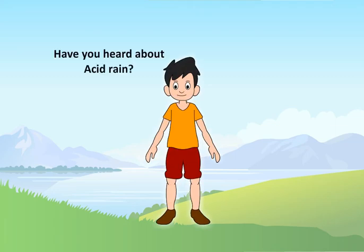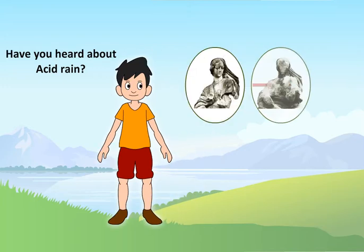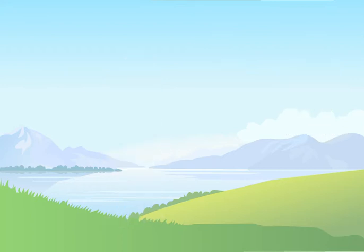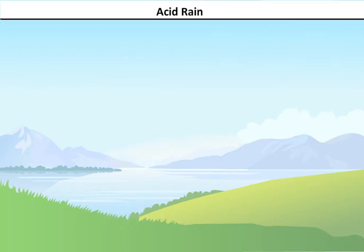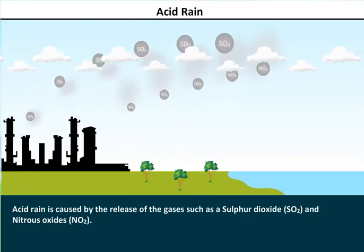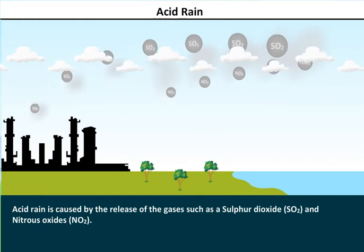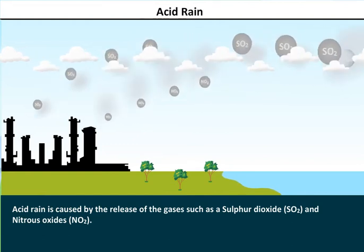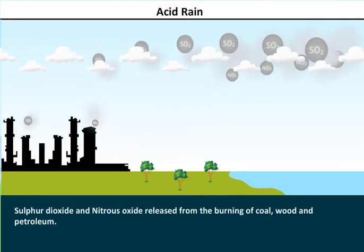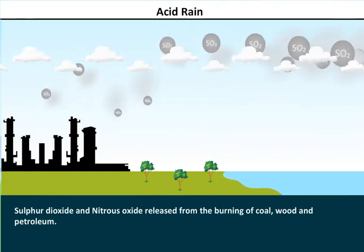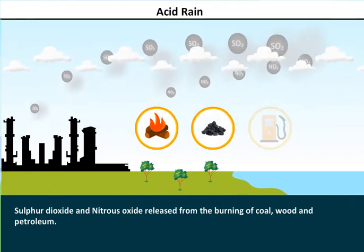Have you heard about acid rain? Acid rain is caused by the release of gases such as sulfur dioxide, SO2, and nitrous oxide, NO2. Sulfur dioxide and nitrous oxide are released from the burning of coal, wood, and petroleum.